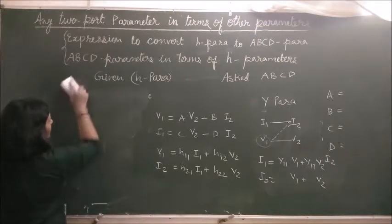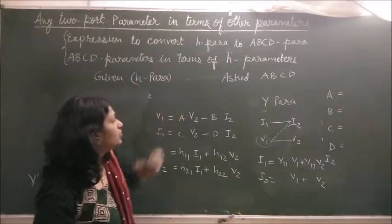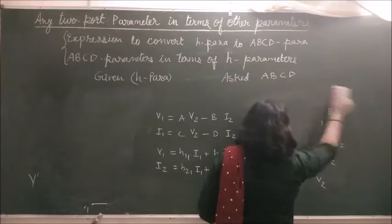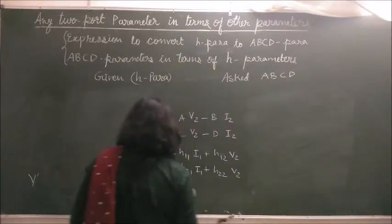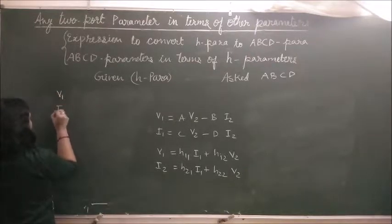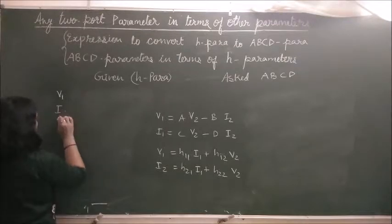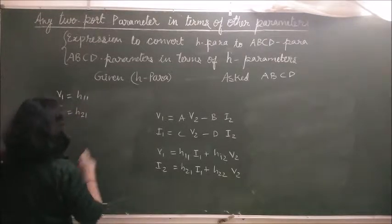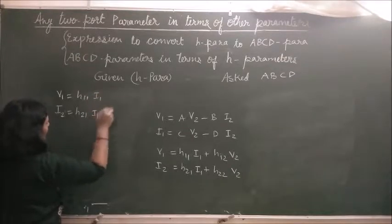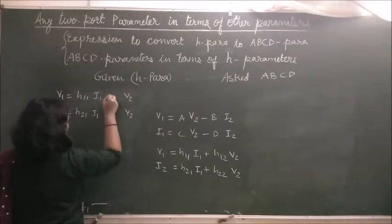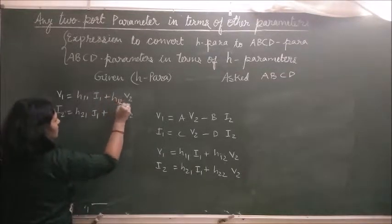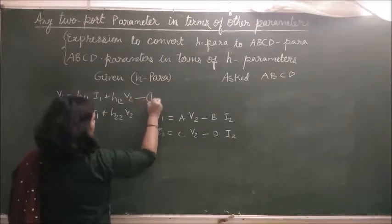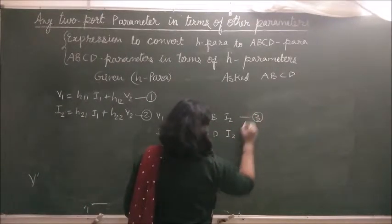Now we convert H parameter into ABCD parameter. Write down the H parameter equations first. V1 and I2 on the left-hand side: V1 = H11·I1 + H12·V2, and I2 = H21·I1 + H22·V2. Moving from V1 to I2 gives us I1 and V2 as variables. These are equations 1, 2, 3, and 4. We will not disturb the ABCD equations — we only work on the H parameter equations.